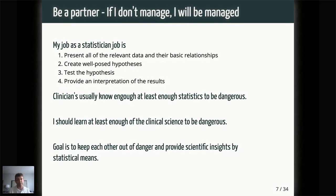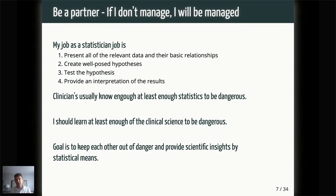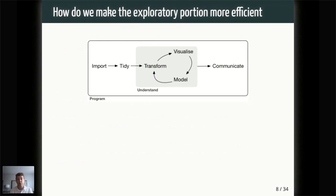Especially as we're thinking about the exploratory portion, the context I'm doing a lot of these analyses in is research, which is inherently somewhat inefficient in some ways — but that doesn't mean all portions should be inefficient. From experience, the part that is kind of inefficient is creating well-posed hypotheses and the interpretation of the results. Those parts are the most research-y, and we usually accommodate a little more inefficiency there. But for the other parts, how do we minimize the amount of inefficiency so that we can really focus on the scientific questions and answering them? So one of the questions we have is: how do we make the exploratory portion more efficient? We have kind of the classic data workflow, but what do we need beyond that?